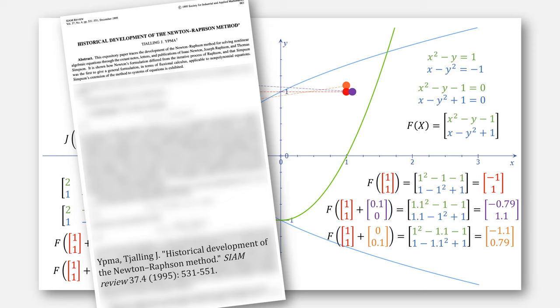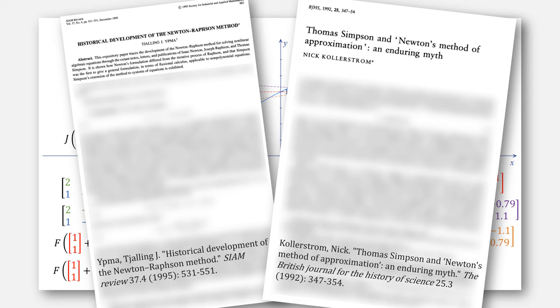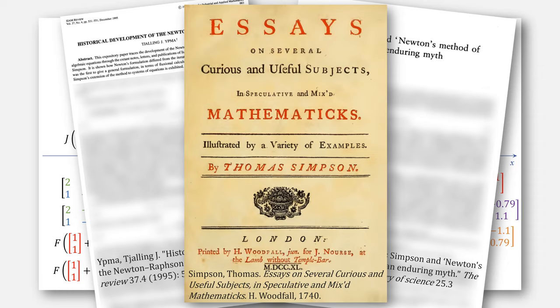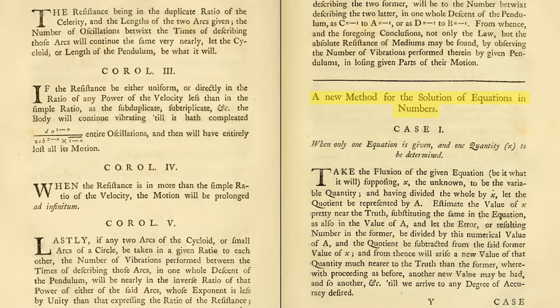For more context, let's look to historical development of the Newton-Raphson method by Ypma and Thomas Simpson, and Newton's method of approximation and enduring myth by Kjellerstrom, both of whom cite essays on several curious and useful subjects in speculative and mixed mathematics by Thomas Simpson. Simpson describes a new method for the solution of equations in numbers, when only one equation is given and the quantity x to be determined.